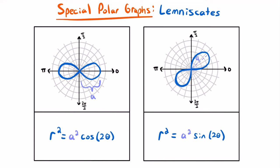That's all for lemniscates, which is the last type of special polar graphs — we had Limaçons, rose curves, and lemniscates. It's not necessary to memorize all these different graphs, but it's certainly helpful. You can always use the method of plotting coordinate points and using symmetry to graph any polar graph. As we get further into polar coordinates, being able to quickly sketch these graphs by recognizing certain polar equations will be immensely helpful. Check out the examples video linked at the end of this video for more practice.